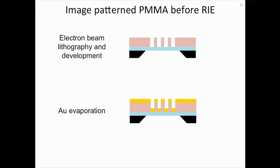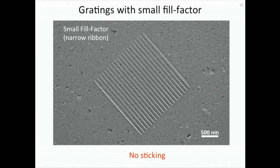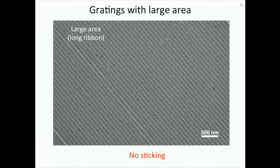One possible explanation of the sticking problem is the resist collapse, which is commonly observed in electron beam lithography. So we want to identify if this is a problem, and we try to look at the resist pattern. After we do electron beam lithography and development, we coated the PMMA resist to look at the resist pattern. To our surprise, the resist pattern looks pretty good, and there is no sticking problem associated with it. This figure shows a small fill factor grating, where there is no sticking problem. Also, we did not observe any sticking problem in a large area grating. This slide shows the TEM image of a large area grating with no sticking problem.